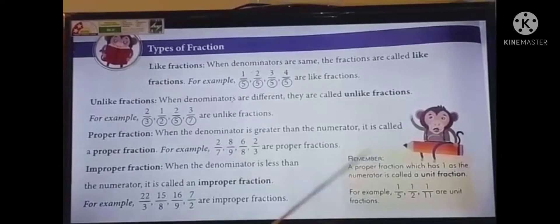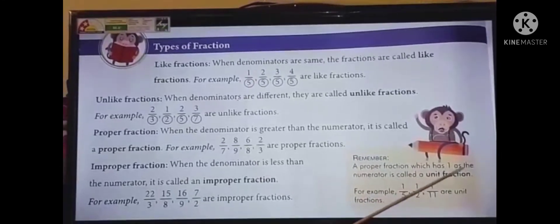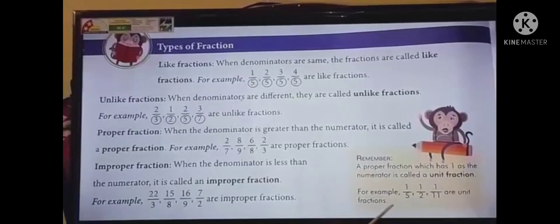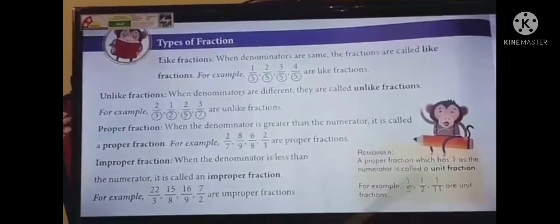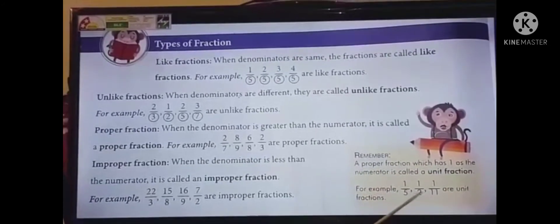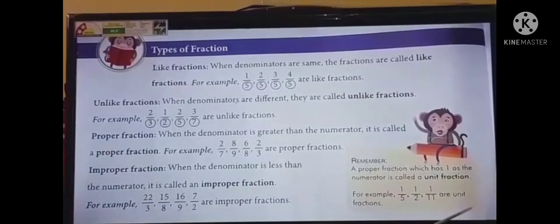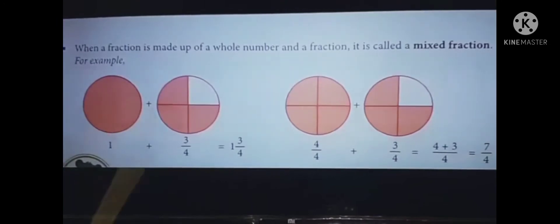Next, remember: a proper fraction which has one as the numerator is called a unit fraction. For example, one by five, one by two, one by eleven are unit fractions. Since the numerator is one, it is called a unit fraction.